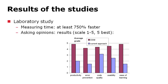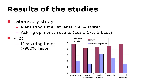The same high ratings applied to error prevention — developers can prevent errors early on. For code quality, they found that the quality of the generated code is better than what they write manually. The usability of the language and tooling, and ease of learning, were also rated better. The pilot project found that the domain-specific modeling approach is more than nine times faster — more than 900% faster.